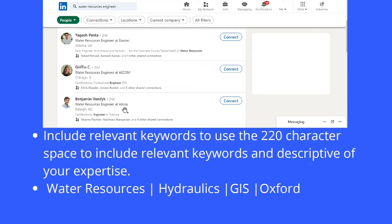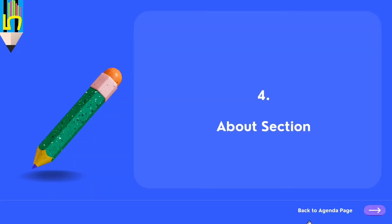You get 220 characters for your headline, so use all that space, but make sure you use only keywords. For example, if you studied at Oxford and are a water resource engineer with experience in hydraulics and GIS, write: 'Water Resources / Hydraulics / GIS / Oxford.' This will rank you for water resources, hydraulics, GIS, and Oxford simultaneously.